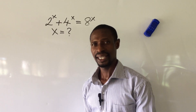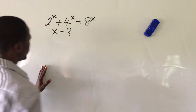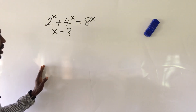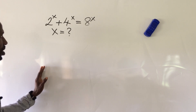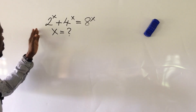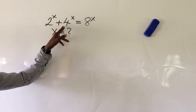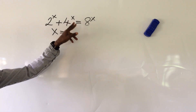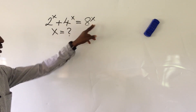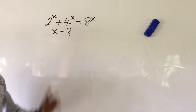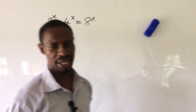Welcome to Online Math TV. Today we have a challenge — solving only paired exponentials. The question is: 2 to the power of x plus 4 to the power of x equals 8 to the power of x. What would be the possible value of x?